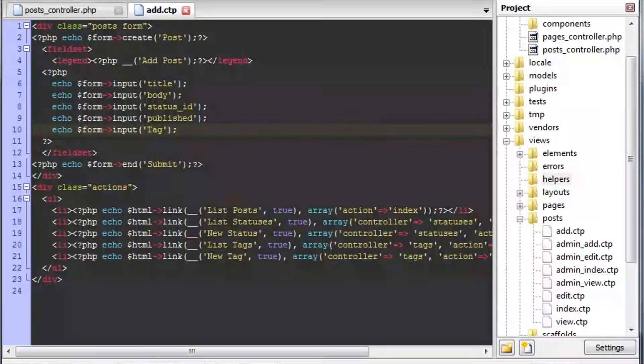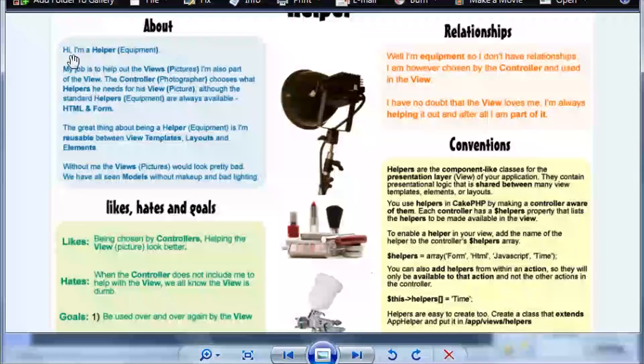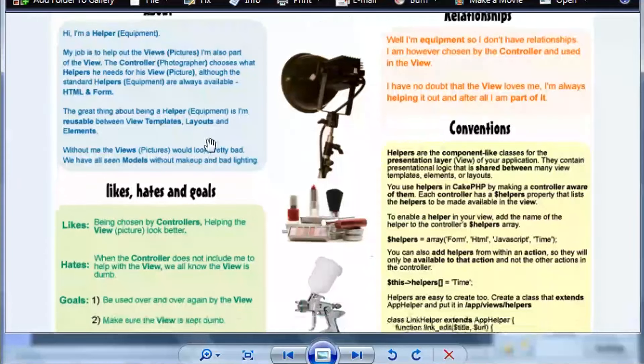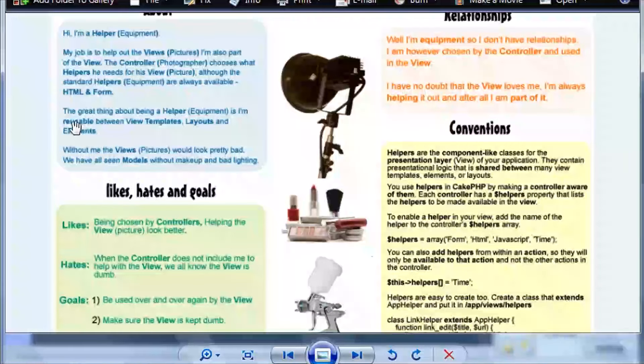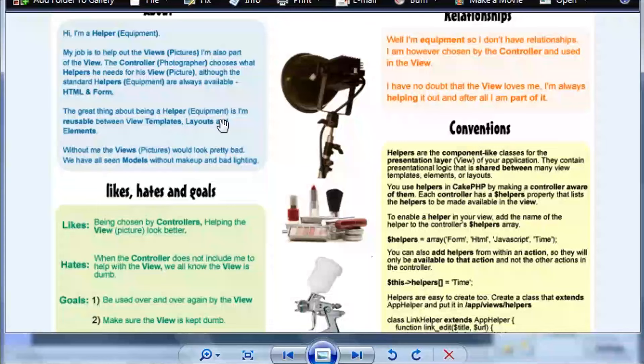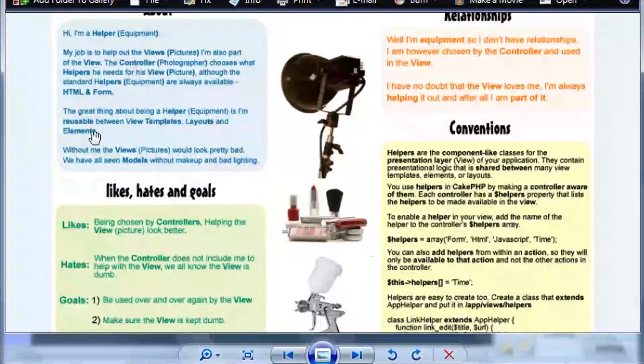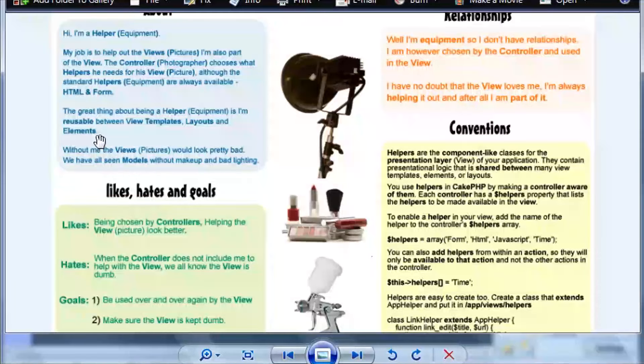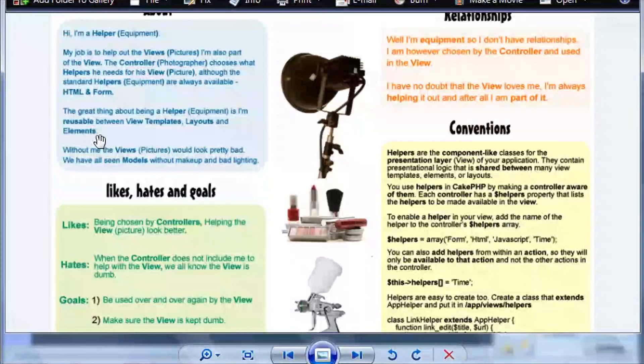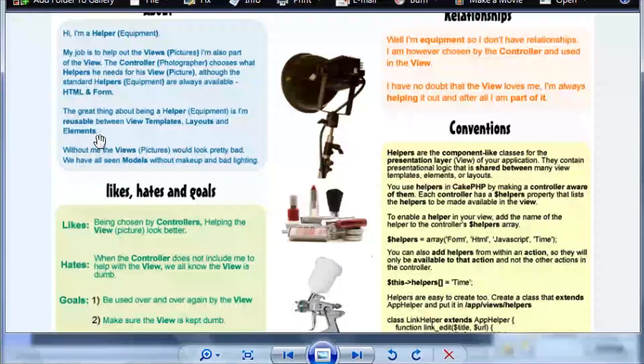So now let's go back and take a look at the Windows Photo Gallery and we'll just finish off the blue box here. The great thing about being a helper equipment is I'm reusable between view templates, layouts, and elements. That's just how a photographer works as well. He gets all his equipment that he needs for his view for when he's going to take his photo. And yeah, he brings that equipment along to all locations.